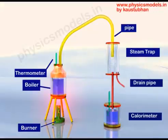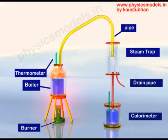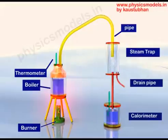On the left you have a vessel which boils water. Instead of calling it a kettle, we call it a boiler. It's placed on a stand and there's a burner below, like a stove. To light the fire, you put a thermometer there because you want to measure the temperature of the steam.